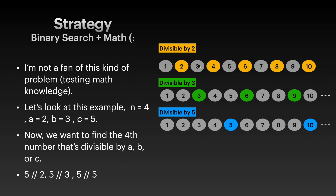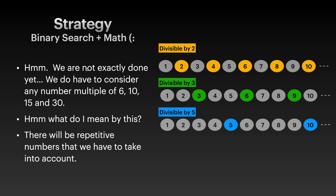We also have to consider numbers divisible by 2 times 5, and 3 times 5. Not to mention we have to account for numbers divisible by the product of all three, which is 30. We need to handle these repetitions, which I'll explain now.